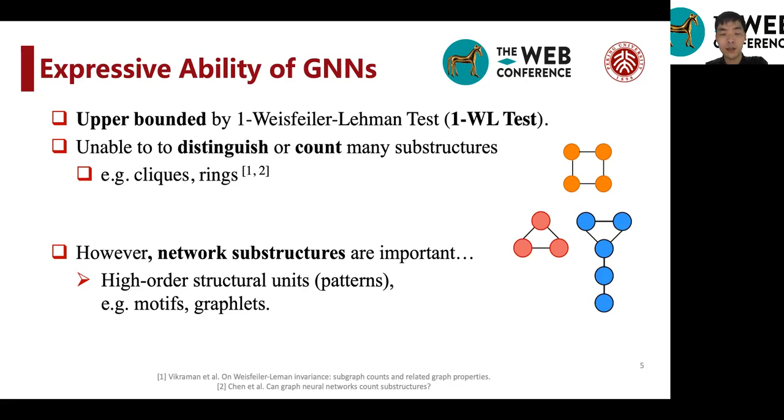And the one-Weisfeiler-Leman test has been shown unable to distinguish or count many substructures. For example, cliques or rings are unable for GNNs and also for one-Weisfeiler-Leman tests. However, these substructures in networks are very important as they shed light on various network tasks.